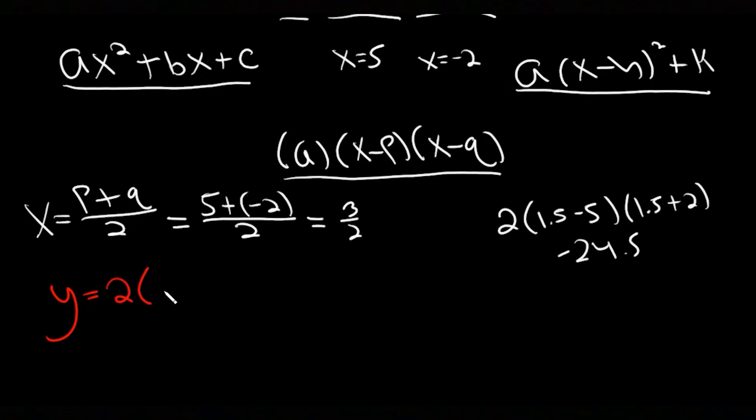Then in parentheses I have x - h. This is my h right here, the x value of the vertex, so -3/2 squared. And then my k is -24.5, so -24.5. Here it is in vertex form. We are done.